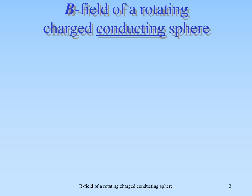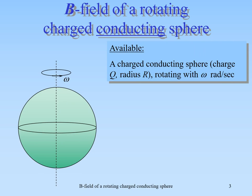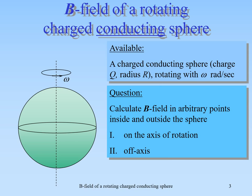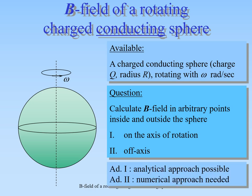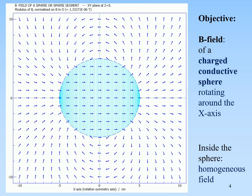The magnetic field of a conducting sphere. We have a charged conducting sphere with charge Q, radius r, rotating with omega radians per second. The question is to calculate the induction at arbitrary points inside and outside the sphere. First we will do that for points on the axis of rotation, and secondly for off-axis points.